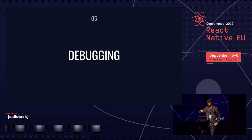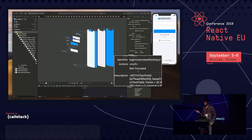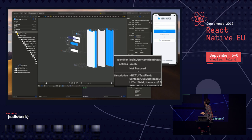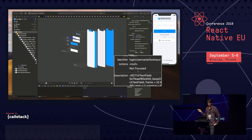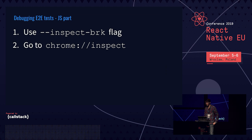How do you debug end-to-end tests? On the native side, there's Xcode's debug view hierarchy tool and Android Studio's layout inspector. In Xcode, you can click through elements and find, for example, the login username text input — it shows the identifier, which is the testID. On the JS side, you can pass the --inspect-brk flag to the node process and open the Chrome inspector to run JavaScript with breakpoints, though you may have trouble with source maps.